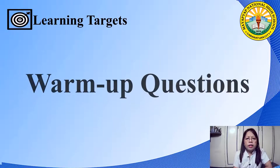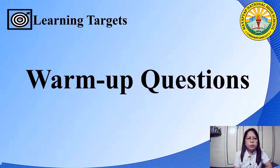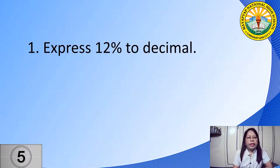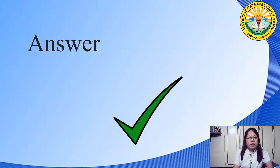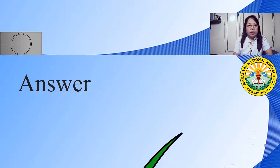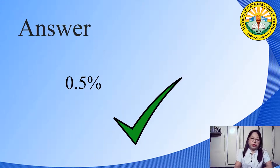Before the lesson, let us have some warm-up questions. First question: express 12% as a decimal. Time starts now. Excellent! The answer is 0.12. Second question: express 0.5% as a decimal. Time starts now. Excellent! The answer is 0.005.